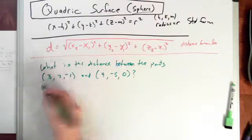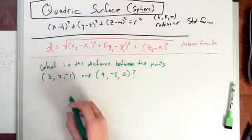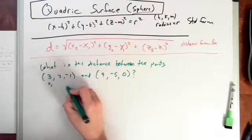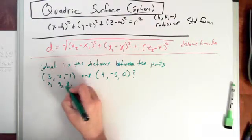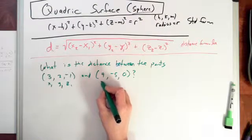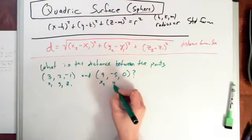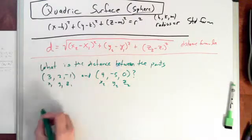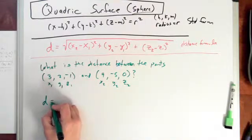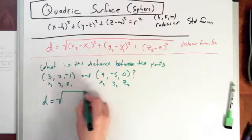First let's identify our x, y, and z coordinates. We'll call this x1, y1, and z1, and we'll call these x2, y2, and z2. We'll just plug straight into the formula and let's see what we get.